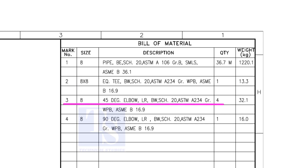Item number 3 is a 45-degree long radius elbow. Note that there are 4 numbers of 45-degree elbows. Item number 4 is a 90-degree long radius elbow, and the quantity is 1.